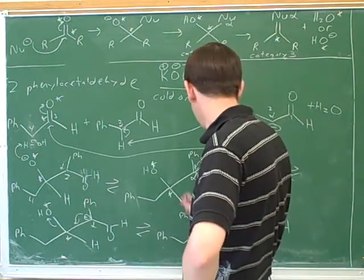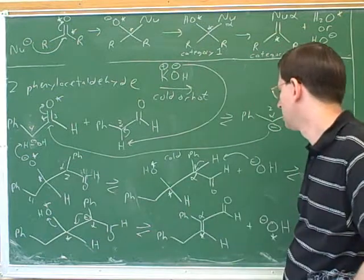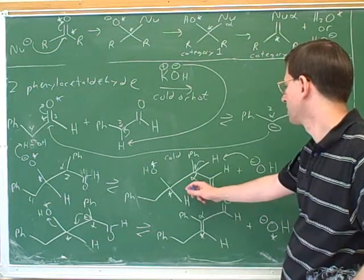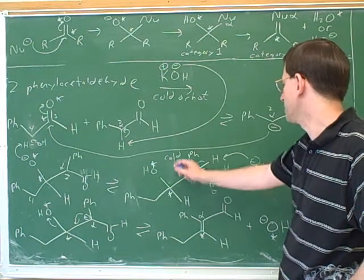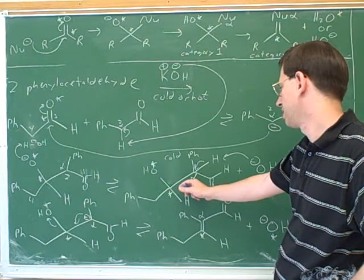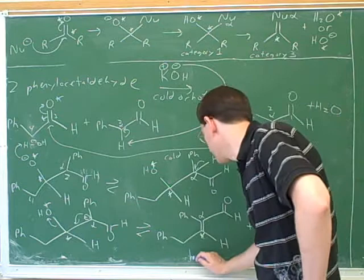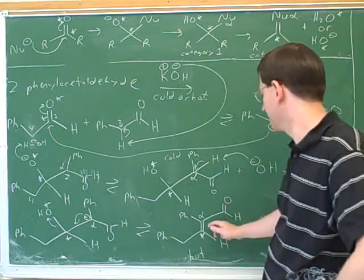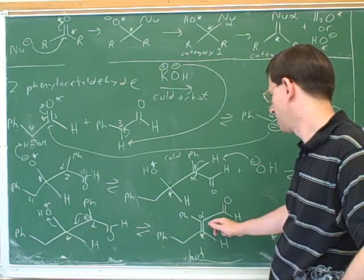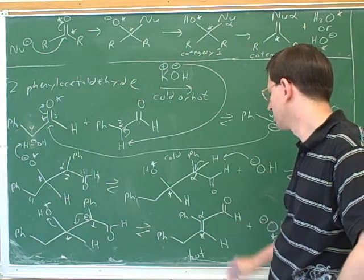What type of functional group did we end up with here under cold conditions? Under cold, where's your final product? This would be the product under cold conditions. We ended up with beta hydroxy aldehyde. That's right, and here's the product we would have gotten under hot conditions. What would be a good name to describe this? Alpha beta unsaturated aldehyde.